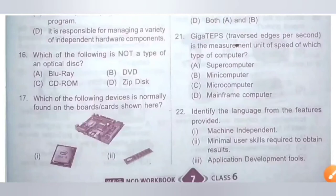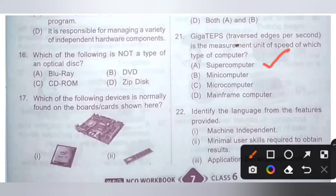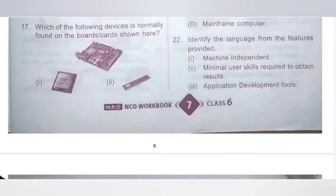Question 21: GTAPS — Giga Traversed Edges Per Second — is the measurement unit of speed of which type of computer? Options: A. Supercomputer, B. Minicomputer, C. Microcomputer, D. Mainframe computer. Option A, Supercomputer, is the correct answer. GTAPS is the measurement unit of speed of a supercomputer.